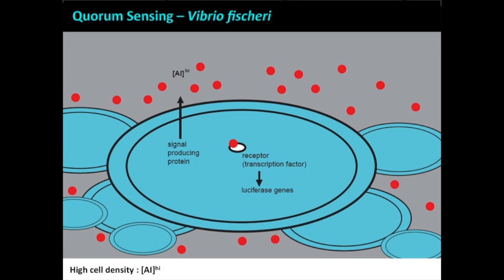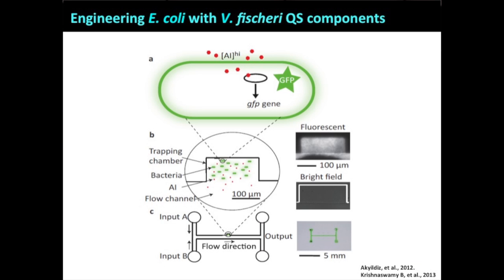Since I'm at Georgia Tech in an engineering school, there were lots of opportunities for collaborations. What I did was facilitate a collaboration with some electrical engineers and a biomedical engineer to explore how we might be able to use such a system as a synthetic communication system. My postdoc, Patrick Bardil, took the genes for producing the signal out of Vibrio fischeri and the gene for the receptor, and genetically engineered E. coli to carry these.